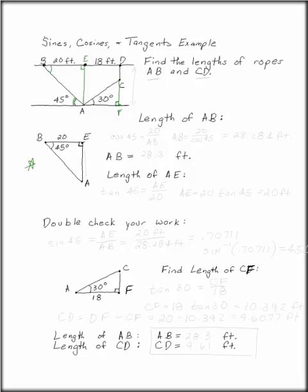The cosine of 45 is going to be adjacent over hypotenuse, or in this case 20 over AB. AB being what we're looking for. AB is going to be 20 over cosine 45, which is 28.284 feet. So AB is 28.3 feet.